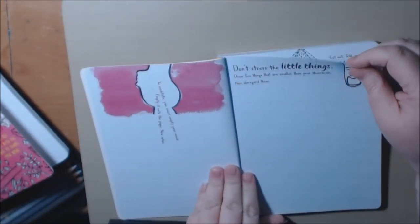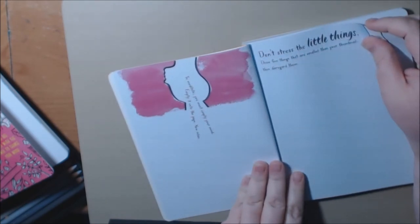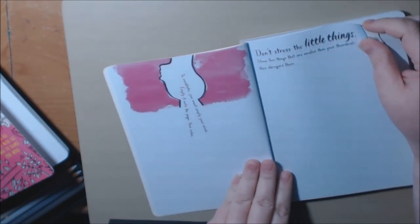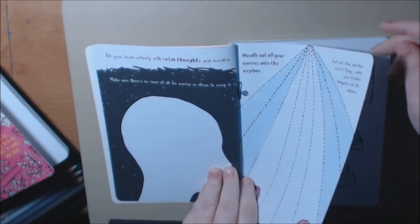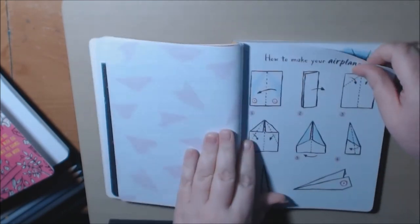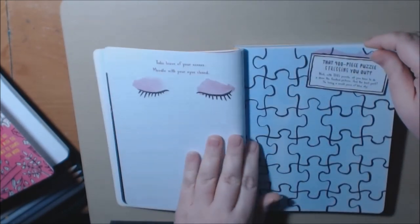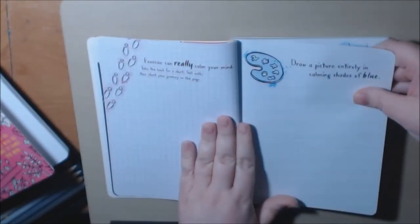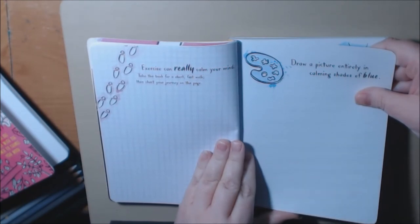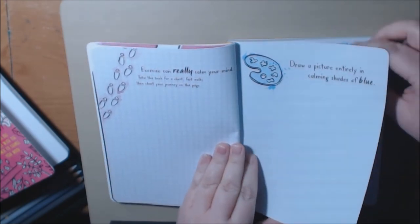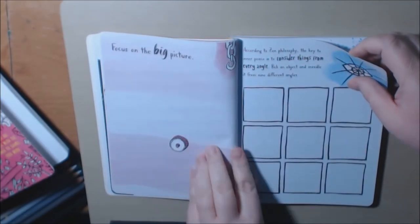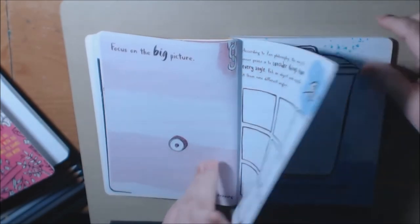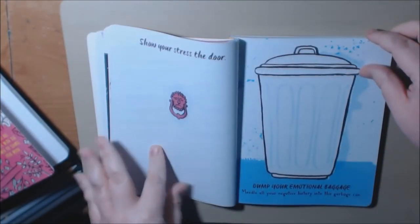Don't stress the little things. I need you to meditate and empty your mind. Empty it onto this page and relax. Some of these pages are repeats of the list. Draw a picture entirely in the calming color of blue. Focus on the big picture. Dump your emotional baggage.